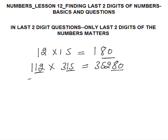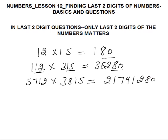Similarly, 5712 into 3815 gives 21791280 — again, the last two digits are 80. So the first concept simply says that while calculating the last two digits of a product or sum, only the last two digits of the numbers matter.